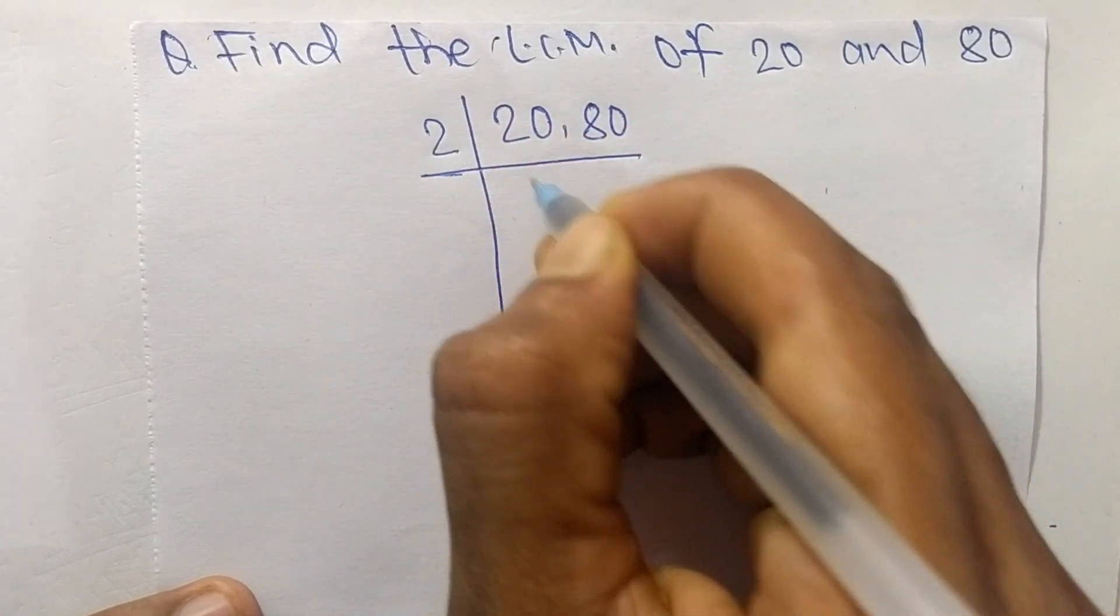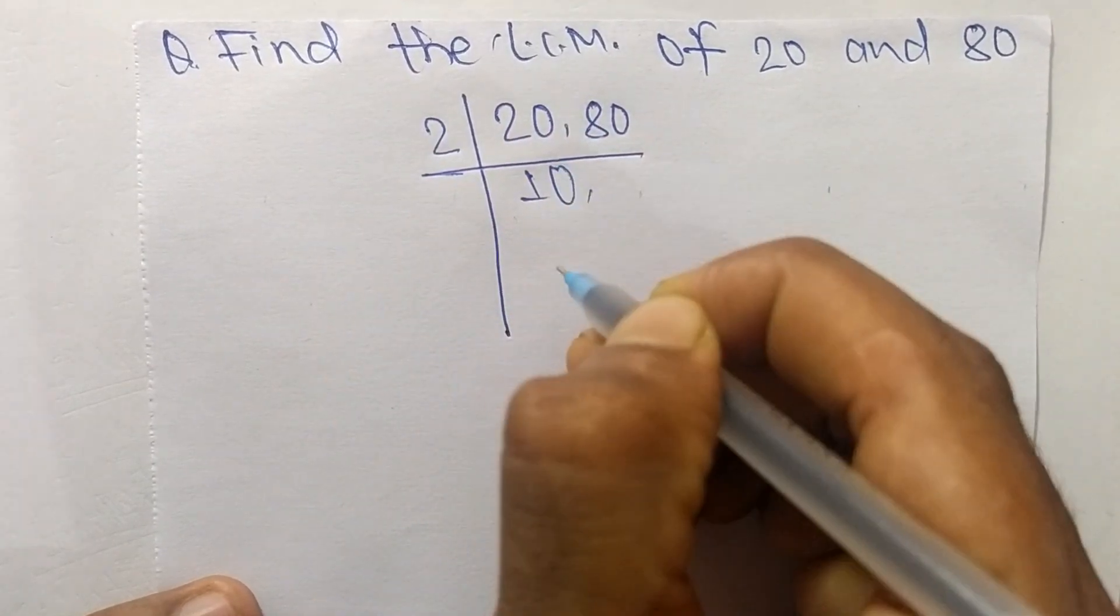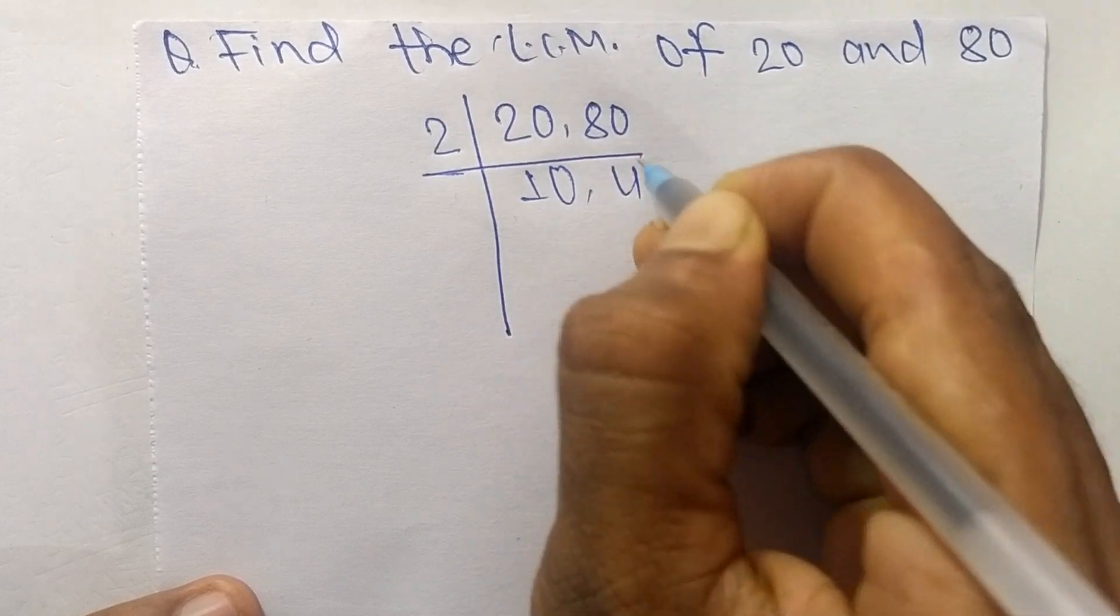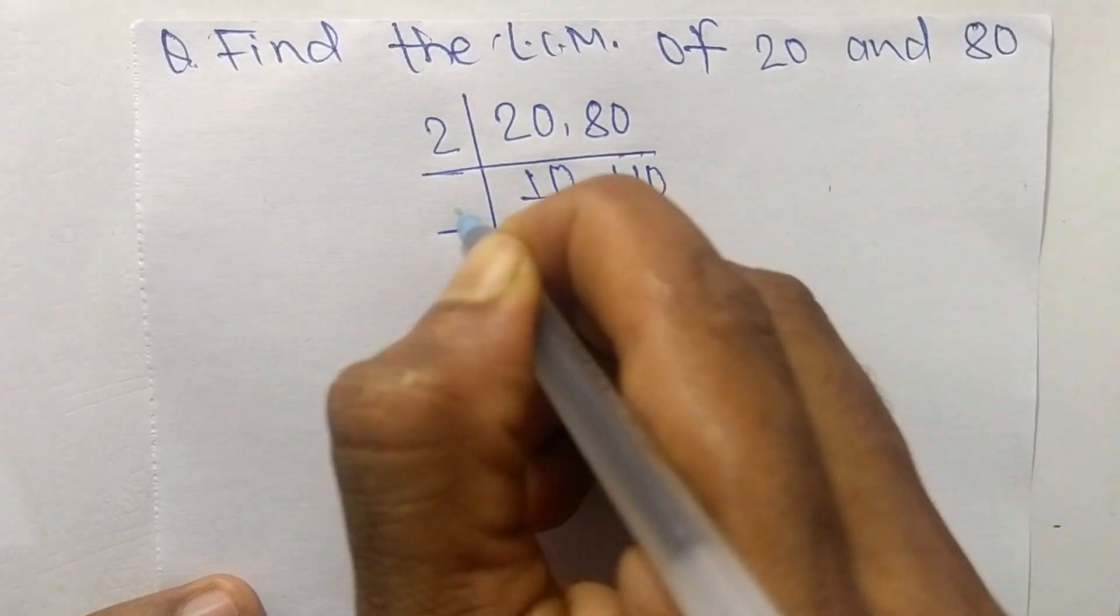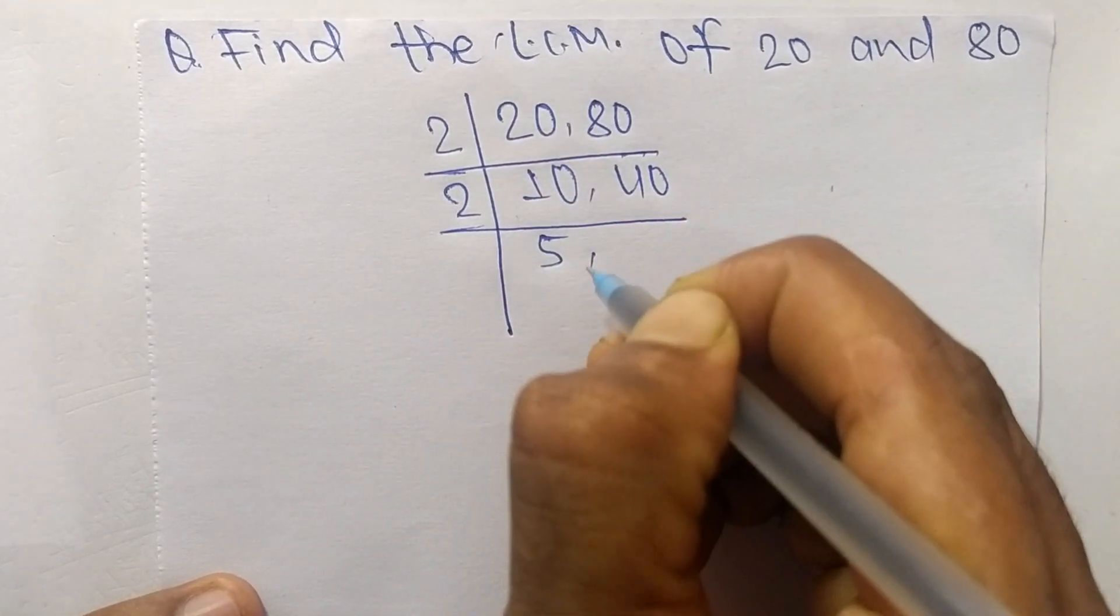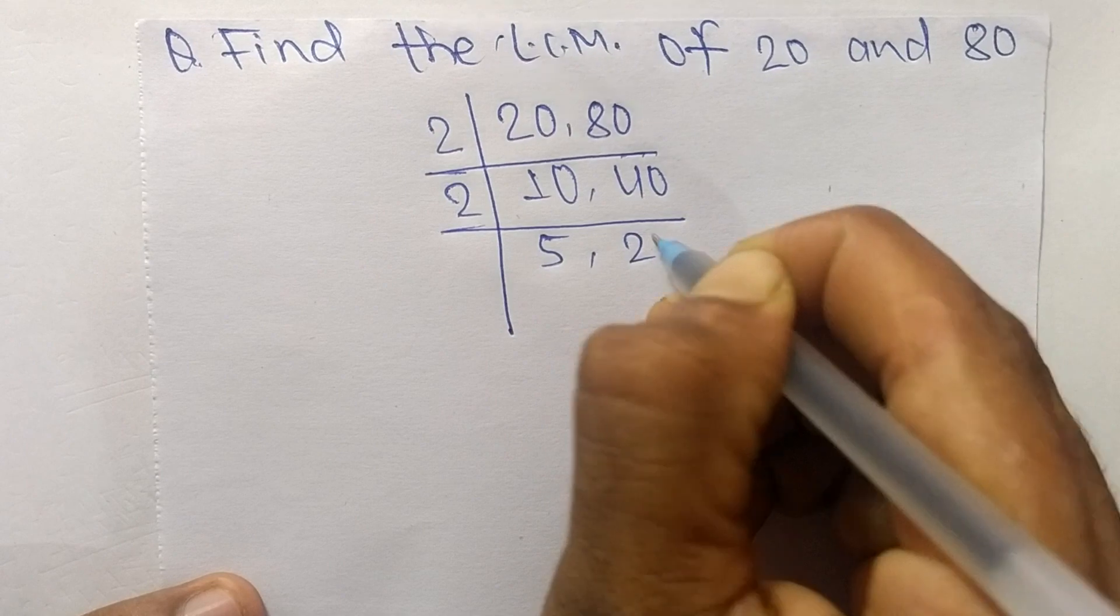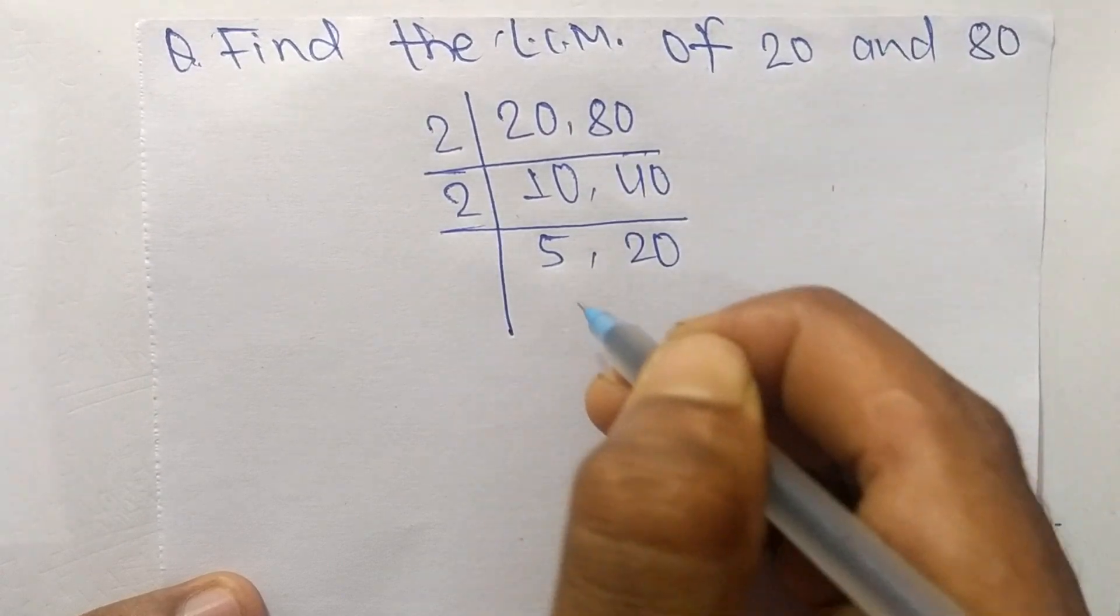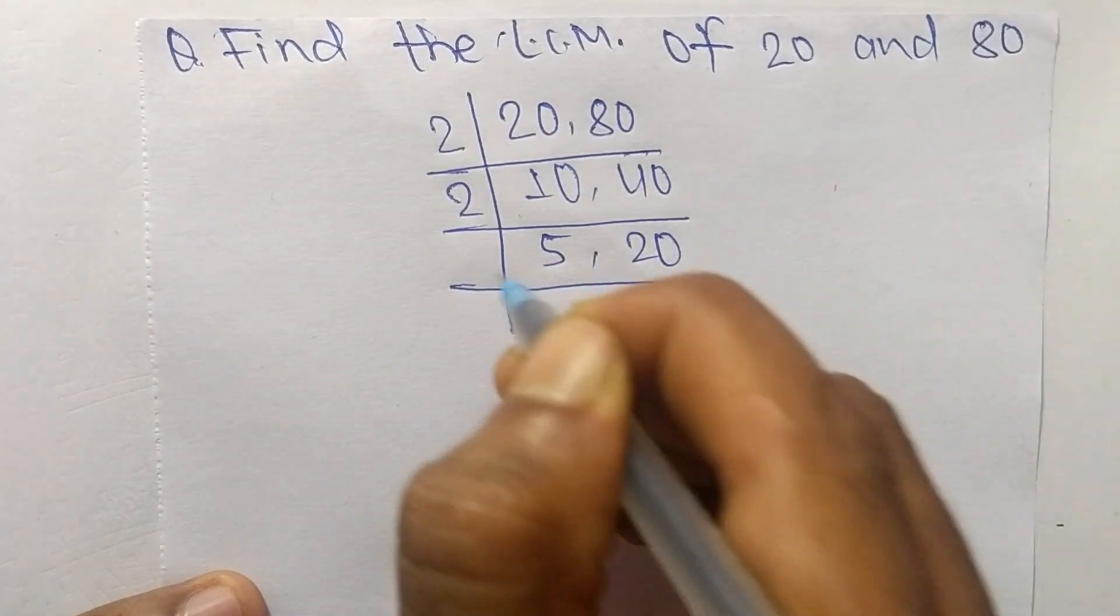2 times 10 equals 20, 2 times 40 equals 80. Again it is divisible by 2. So 2 times 5 equals 10 and 2 times 20 equals 40. Again it is divisible by 5.